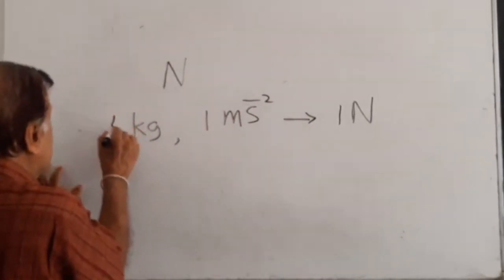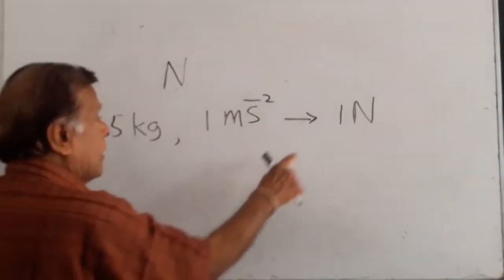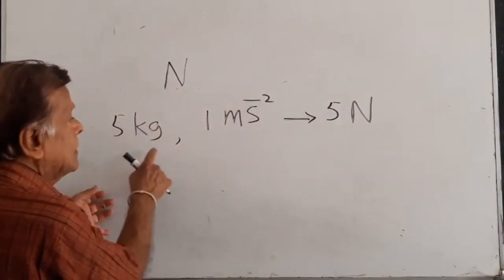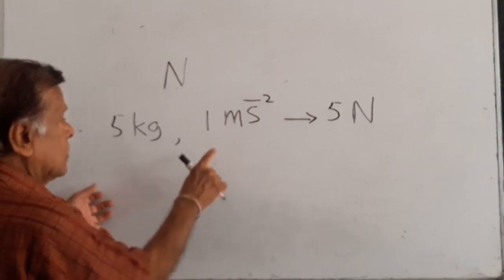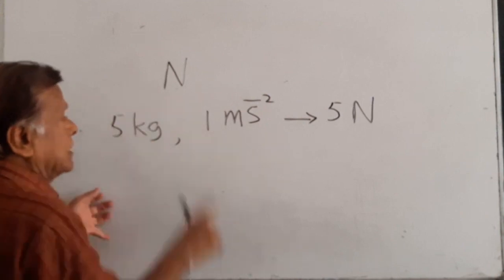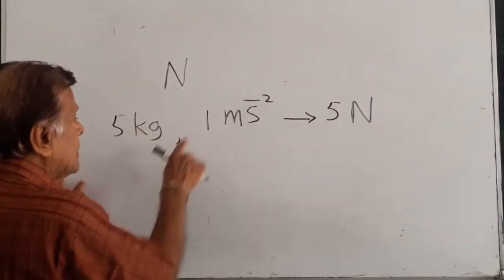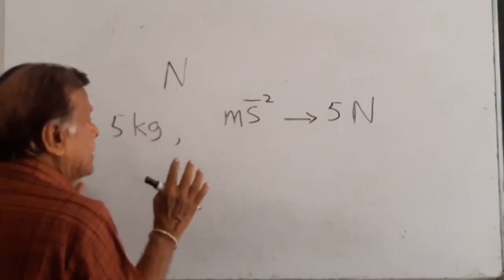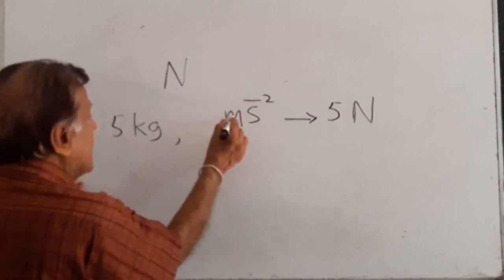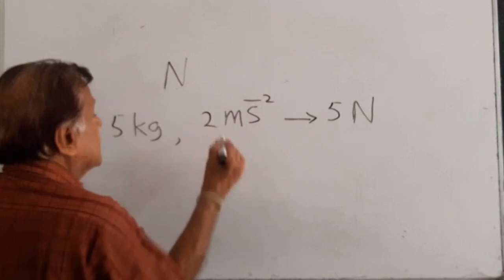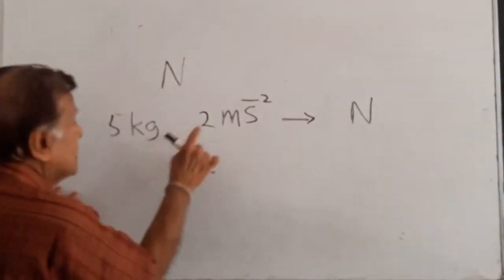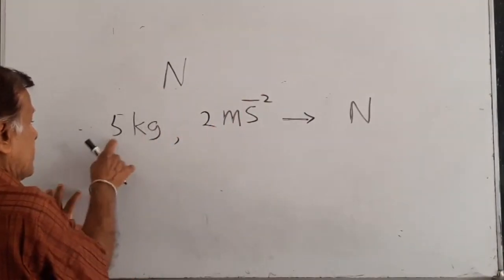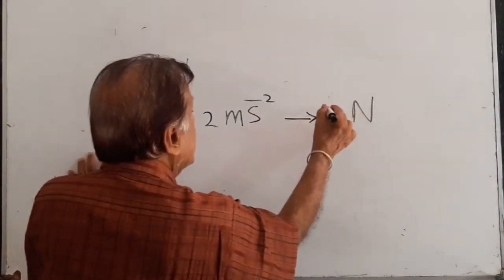Now if the mass is five kilograms, then force will be five times that. To produce an acceleration of one meter per second per second on a mass of five kilograms, you need five Newtons. To produce an acceleration of two meters per second per second on a mass of five kilograms, you need ten Newtons.